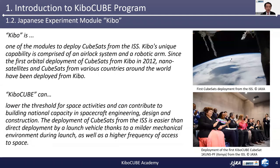The Kibo module is one of the modules to deploy CubeSat from the ISS. Kibo's unique capability is comprised of an airlock system and a robotic arm. Since the first orbital deployment of CubeSat from Kibo in 2012, nanosatellites and CubeSats from various countries around the world have been deployed from Kibo. KiboCube can lower the threshold for space activities and can contribute to building national capacity in spacecraft engineering, design, and construction. The deployment of CubeSat from the ISS is easier than direct deployment by a launch vehicle, thanks to a milder mechanical environment during the launch, as well as a higher frequency of access to space.